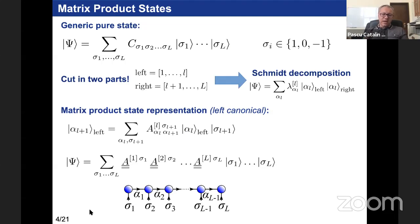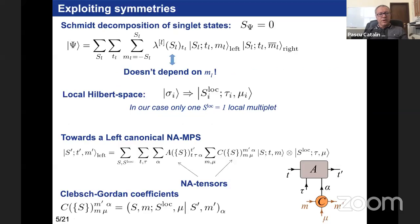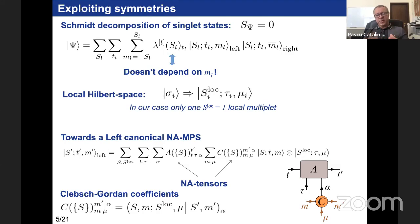These A tensors have three labels. When including symmetries in the problem, we need to complicate things a little, but this has very useful implications for computational time and memory savings. We can do a similar Schmitt decomposition for a singlet ground state. Instead of simple labeling like σ, we replace states by multiplets labeled by total spin Sᵢ, multiplet index τᵢ, and magnetic quantum number μᵢ. Working with multiplets instead of states helps greatly.